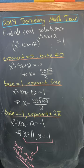This breaks down into three cases. The case when the exponent is zero but the base is not zero. In other words, x squared plus 5x plus 2 equals zero. Here you get negative 5 plus or minus root 13 over 2.